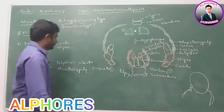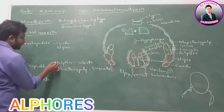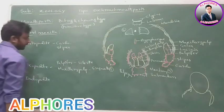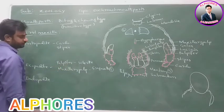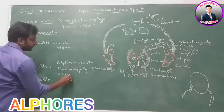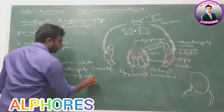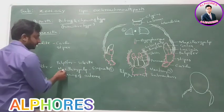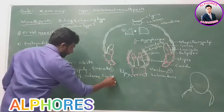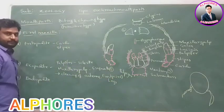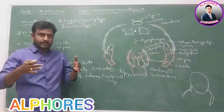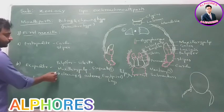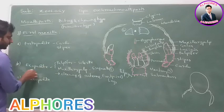What is the function of maxillary palp? The maxillary palp helps in cleaning of antennae and also cleaning of the front pair of legs. Antennae are the sensory organs present in the second segment of the head. So palpifer and five-segmented maxillary palp are the two parts of exopodite.